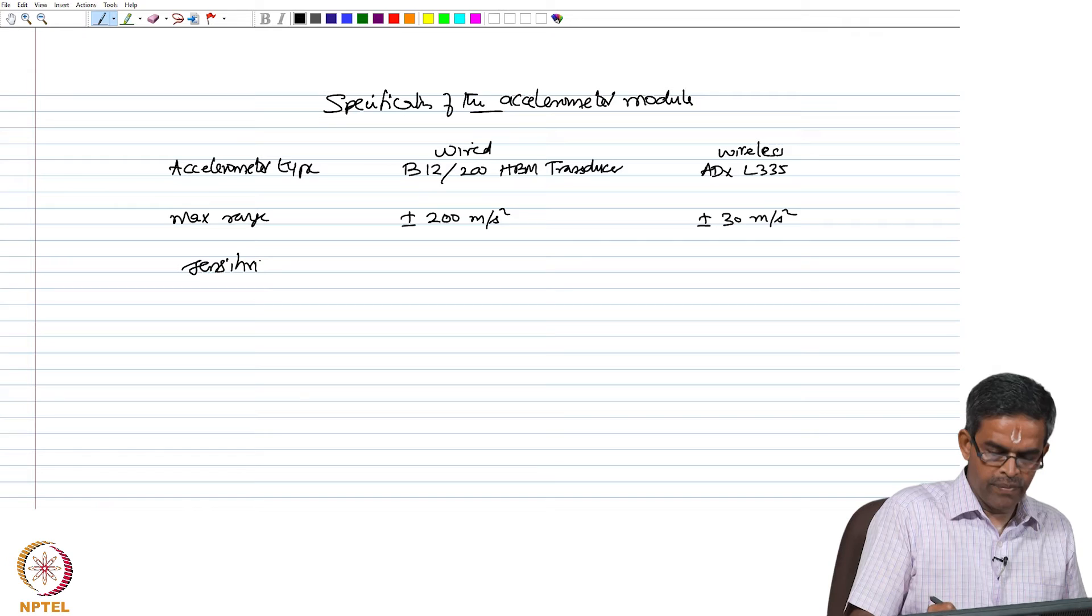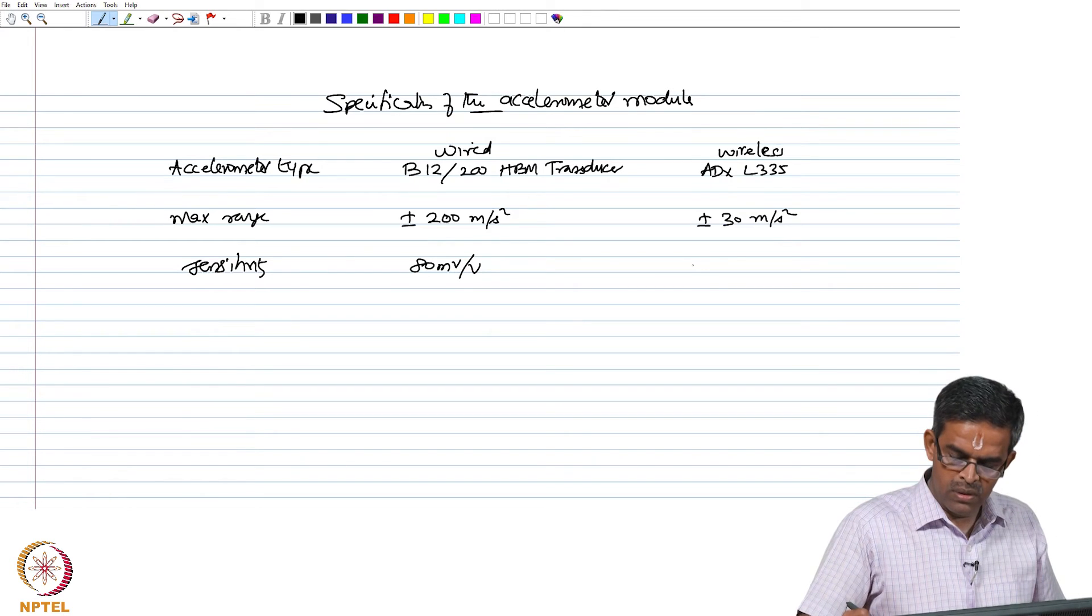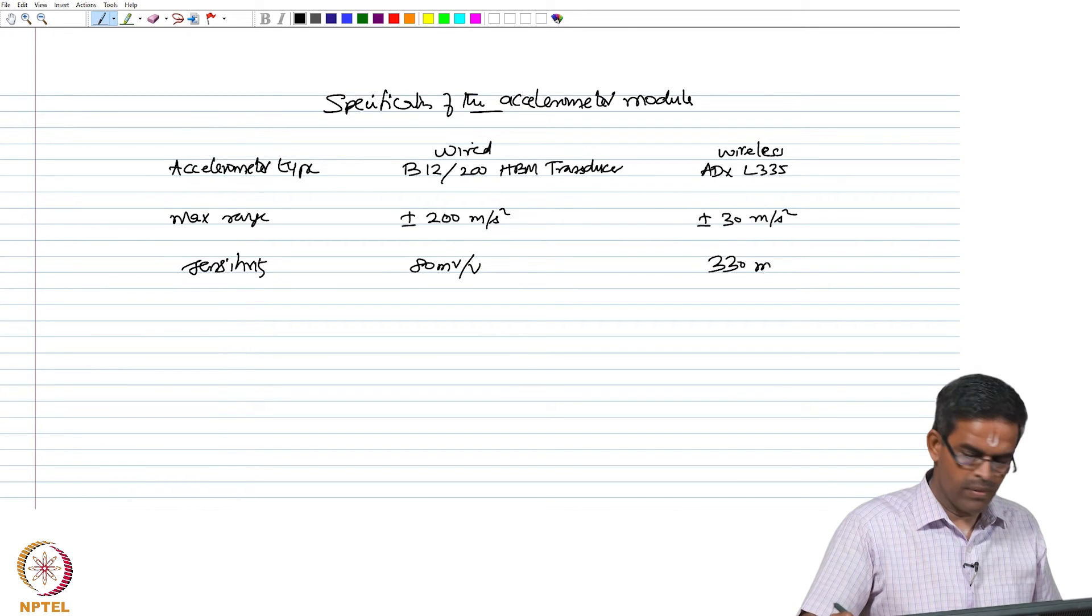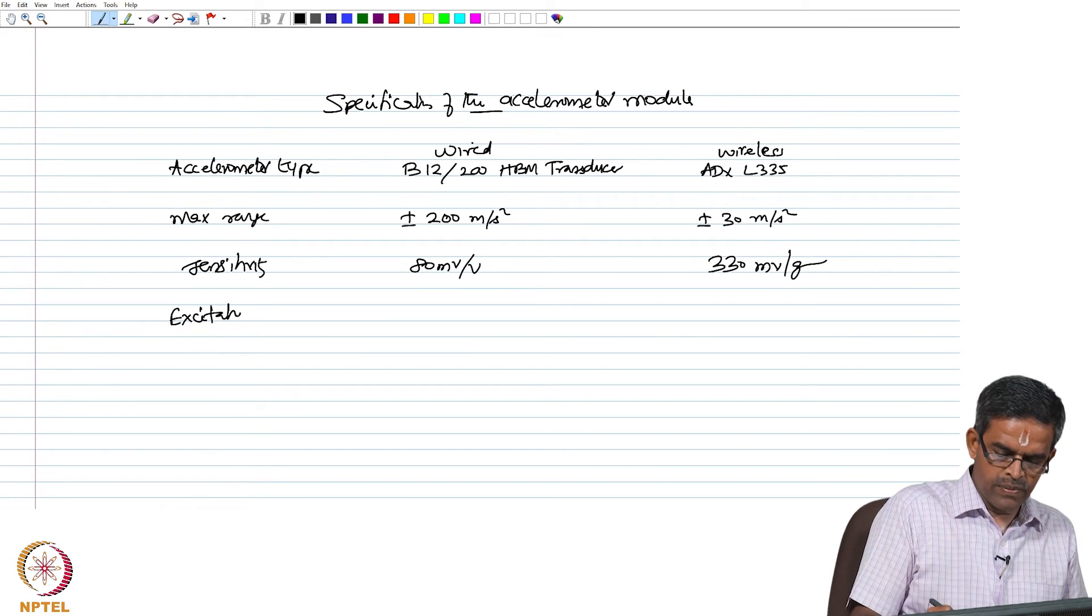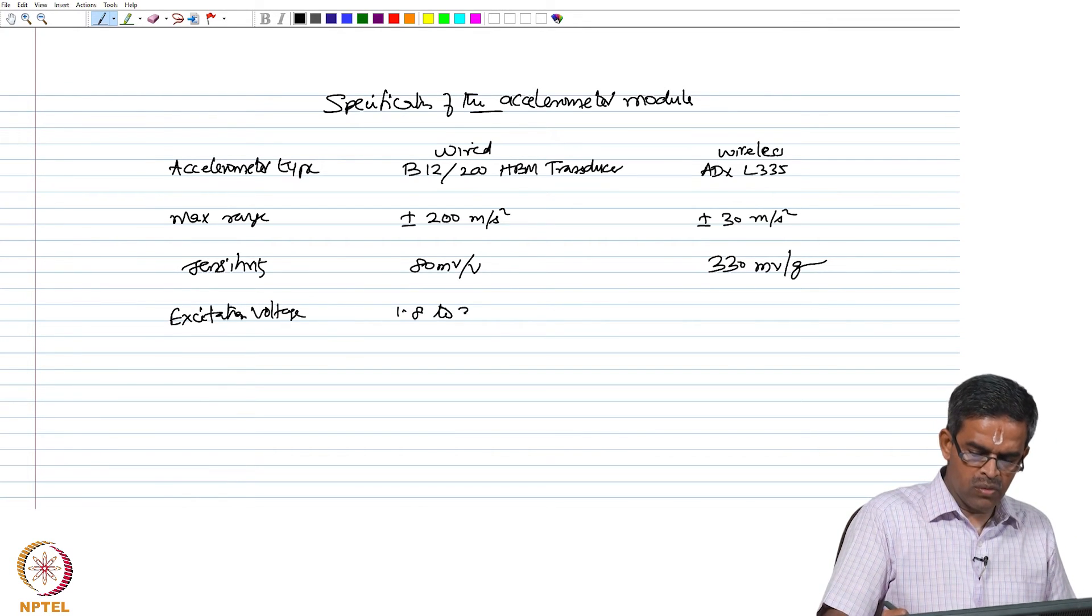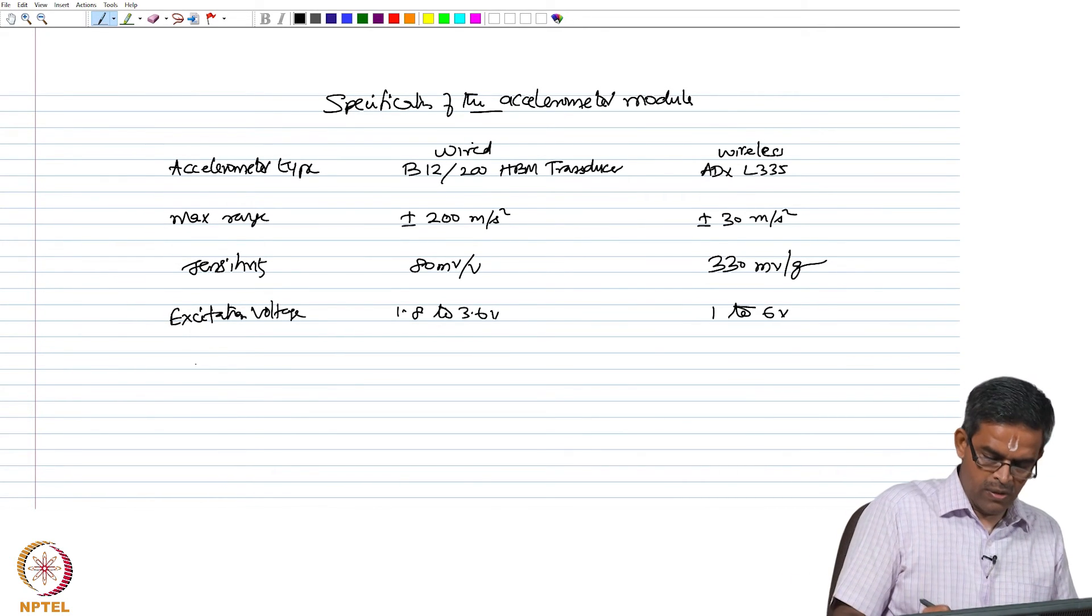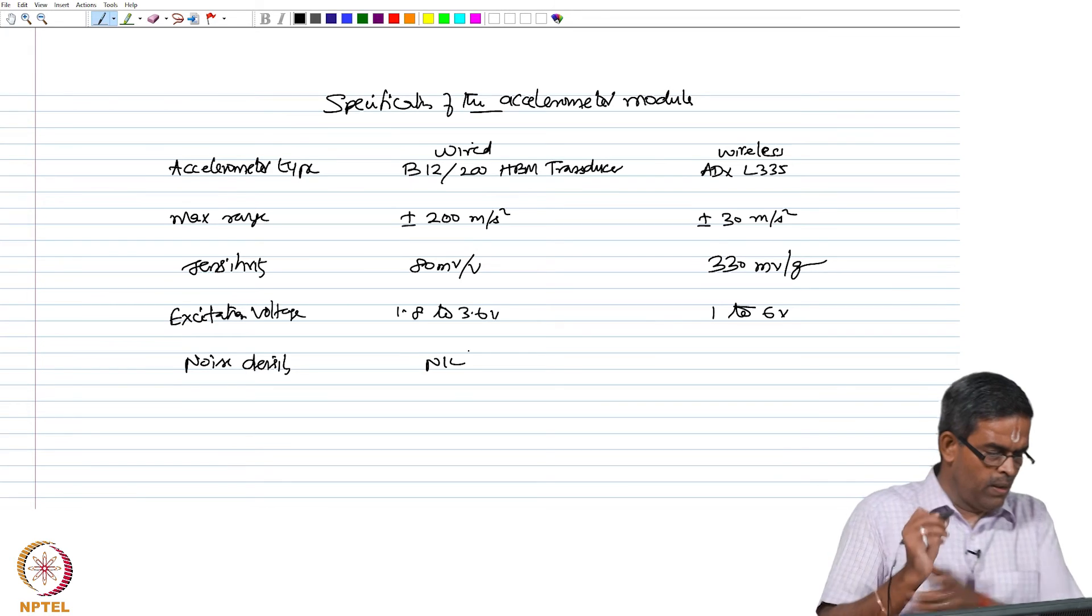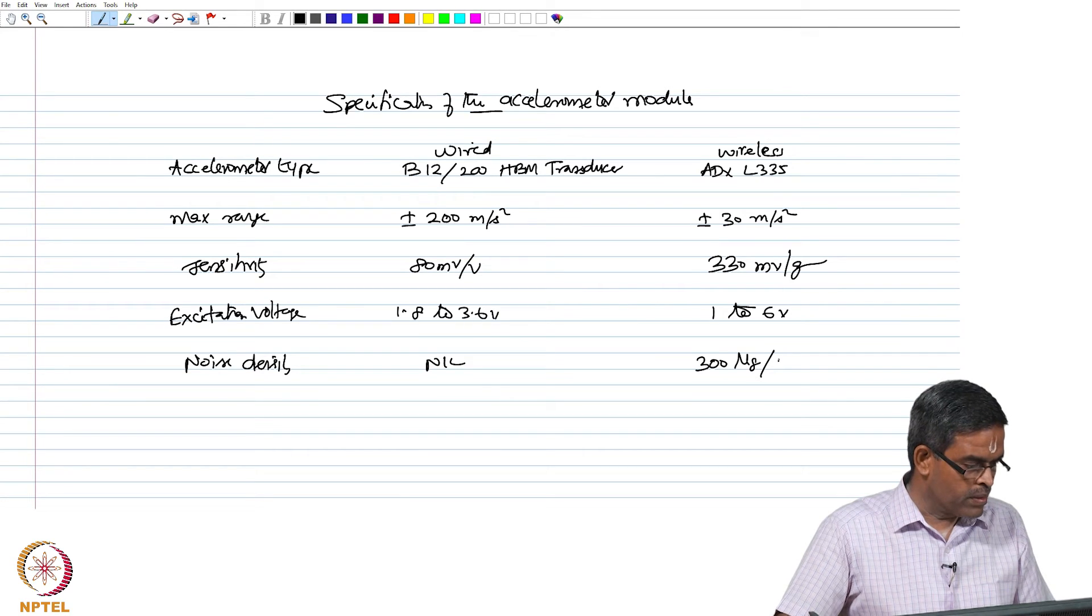Sensitivity is about 80 millivolt per volt, and this is about 330 millivolt per gram. The excitation voltage for operation is about 1.8 to 3.6 volts, whereas this requires slightly higher power, 1.8 to 3.6 volts. The noise density, of course, in wired is practically nil, whereas in this case it is 300 microgram per hertz.